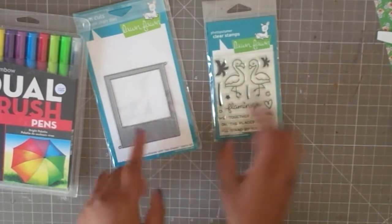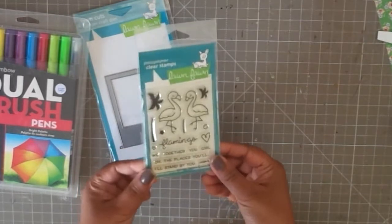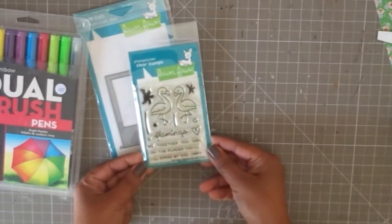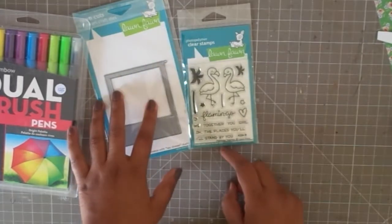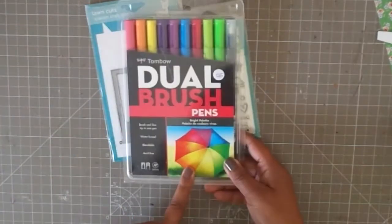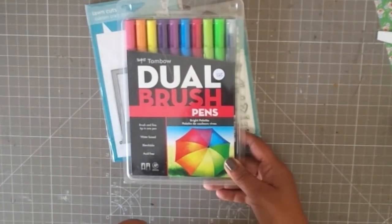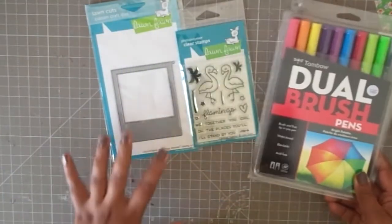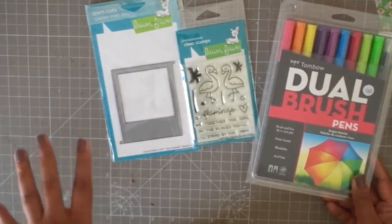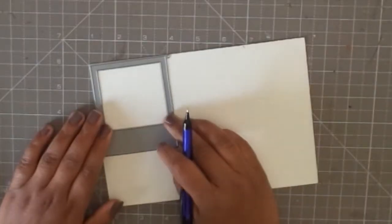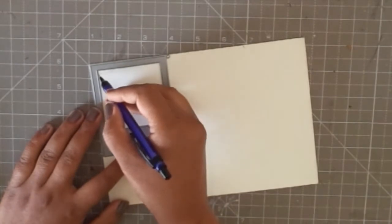I'll be using the stamp set as well as the Polaroid die and I want to create a scene inside that Polaroid. Apart from the die and the stamp, I have plans of using the Tombow dual brush pens. These are water-based and they work like watercolors, so it makes the task really easy.